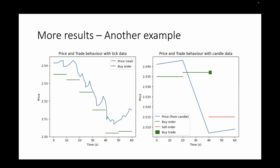In another example, the candle data simulation makes a trade execution but the tick data simulation does not. The reason is that the price decreases rather gradually, which is captured with the tick data. But in the candle data, since it only includes four values, the decrease in price appears much more sharp, causing it to execute the trade with that specific algorithm. This phenomenon should happen on pretty much any algorithm you can think of.